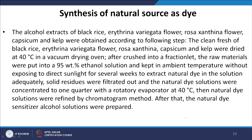The extraction procedure involves drying fresh clean material (black rice, erythrina variegata flower, rosaxanthin, capsicum, kelp) at 40°C in a vacuum drying oven after crushing. The raw materials are then placed in a 95 wt% ethanol solution and kept at ambient temperature without direct sunlight for several weeks to extract the natural dye. Solid residues are filtered out and the natural dye solution is concentrated to one-quarter using a rotary evaporator at 40°C. Finally, the natural dye solution is refined by chromatography. The TiO2 photoanode is then dipped in this natural dye sensitizer solution overnight, and the device is completed with electrolyte solution and platinum counter electrode.